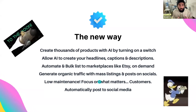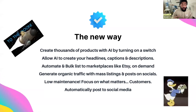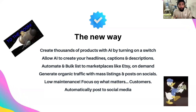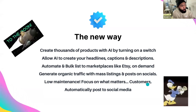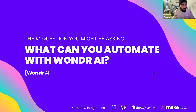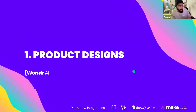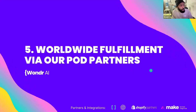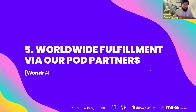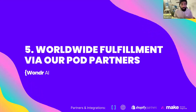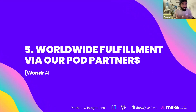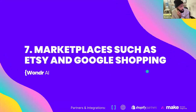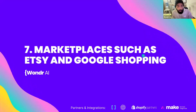You get to focus on what really matters — your customers — because you'll have so much more time to devote to other parts of your business to help it grow. So what exactly can be automated with Wonder AI? A lot: product designs, descriptions, mock-ups, publishing those products. We go through a print-on-demand vendor, which means no inventory on your end. Once an order is made on your platform, companies like Printify get the order and send it to the customer.